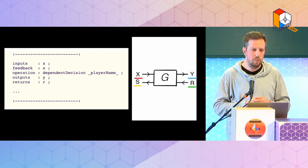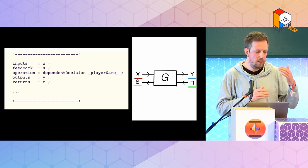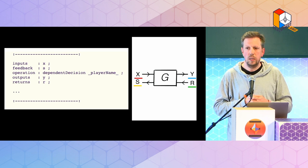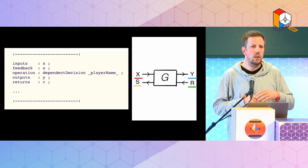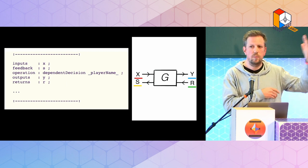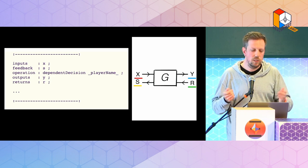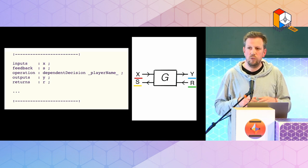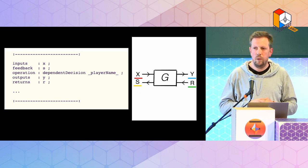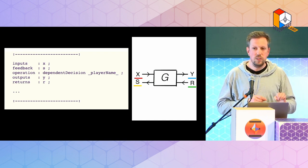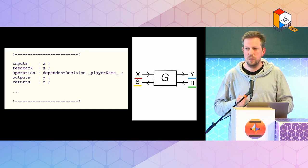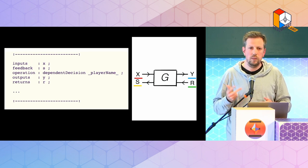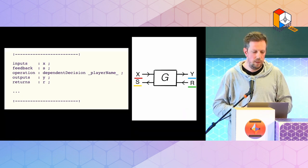Inside the game, there are the same four fields — inputs, feedback, outputs, returns — organized in line blocks of five elements, and there may be more of them. You can take information from the outside, use it, or ignore it, and you may also create new information internally. The key difference is the operation field, which for this talk can be three things: a decision, a computation, or another open game that you substitute in.